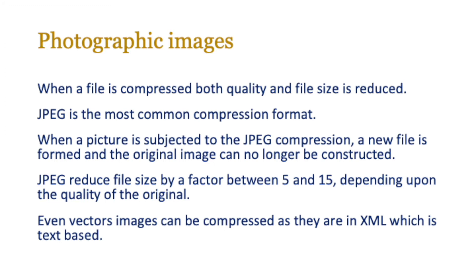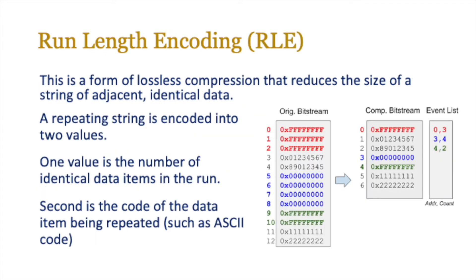JPEG is the most common compression format used worldwide. When a picture is subjected to JPEG compression, a new file is formed and the original image can no longer be reconstructed — you can't go back to the original. JPEG reduces file size by a factor of between 5 and 15, depending on the quality of the original. One might think that vector images can't be compressed, but since they are in XML — which is text-based — we can apply compression using techniques such as run length encoding.